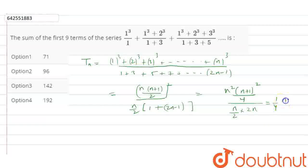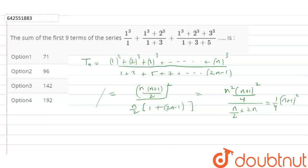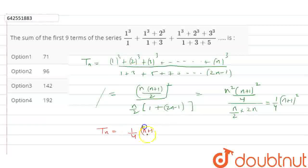So the answer simplifies to (1/4)(n+1)², as n² and n² cancel. Therefore, the nth term Tₙ = (1/4)(n+1)².